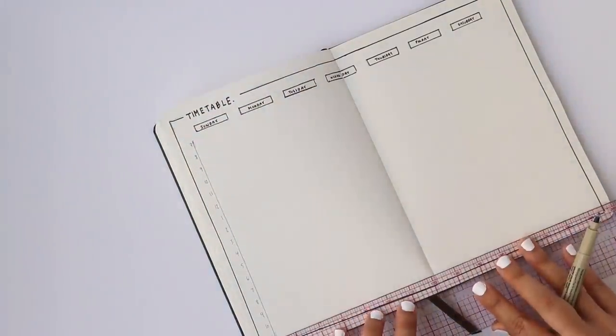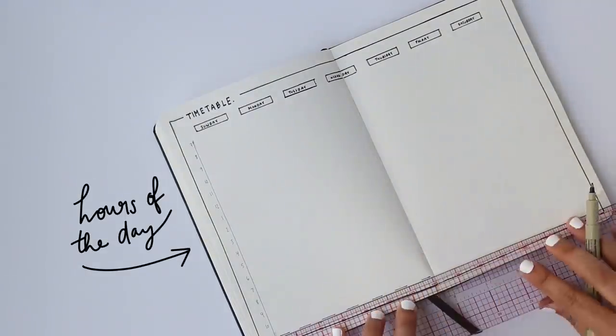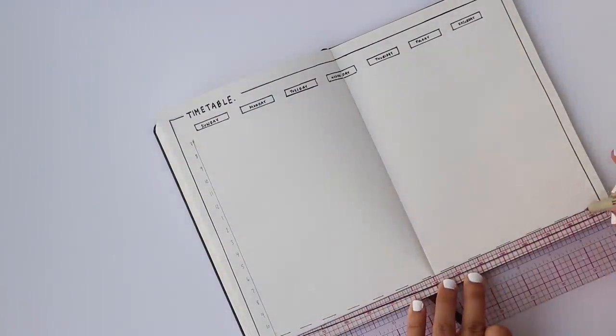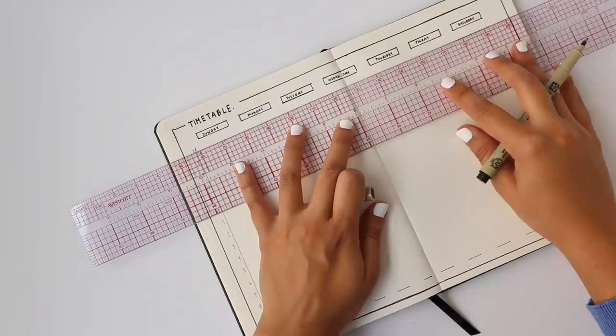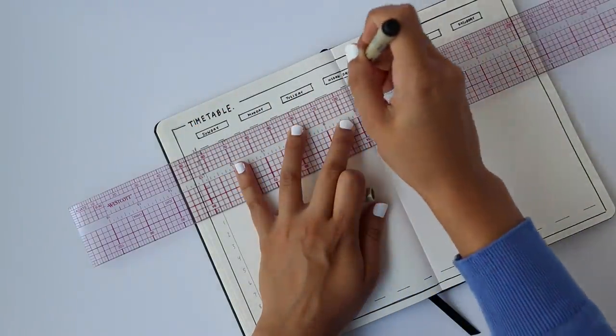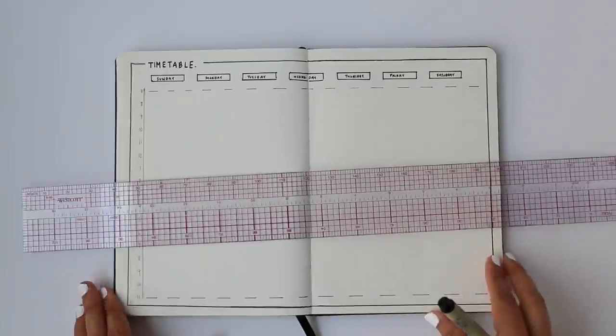So you write down when your classes are which is pretty typical for a timetable spread, but also when are you going to study for each of those classes specifically? When are you going to have social time, me time?